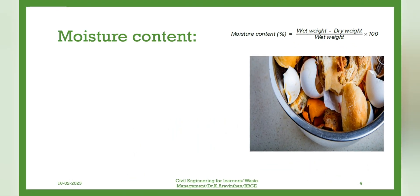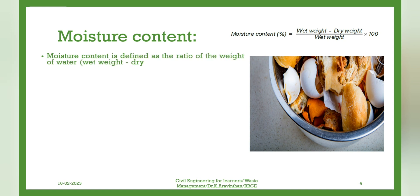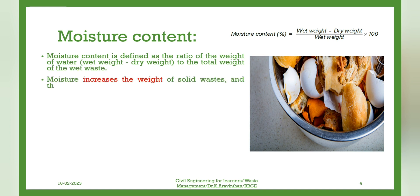Moisture Content. Moisture content is defined as the ratio of the weight of water — wet weight minus dry weight — to the total weight of the wet waste. Moisture increases the weight of solid wastes, and thereby the cost of collection and transport.